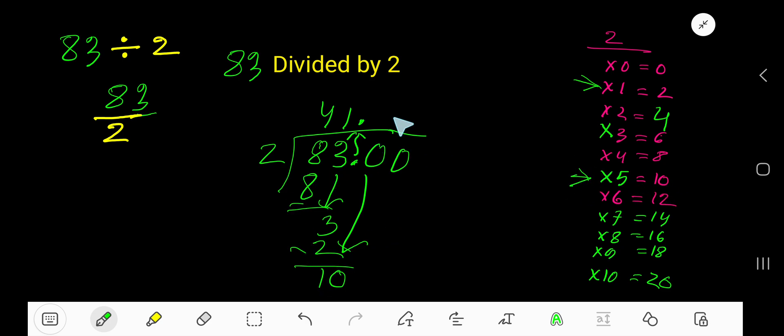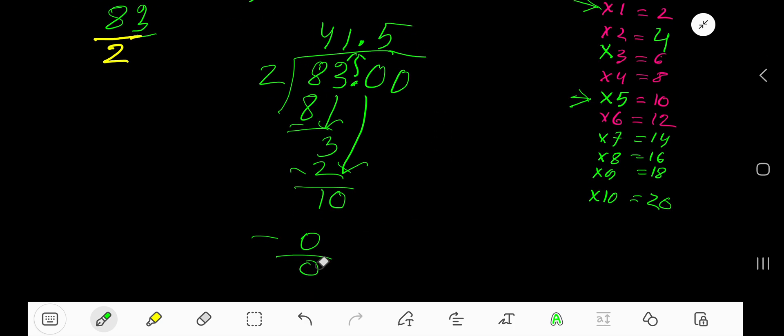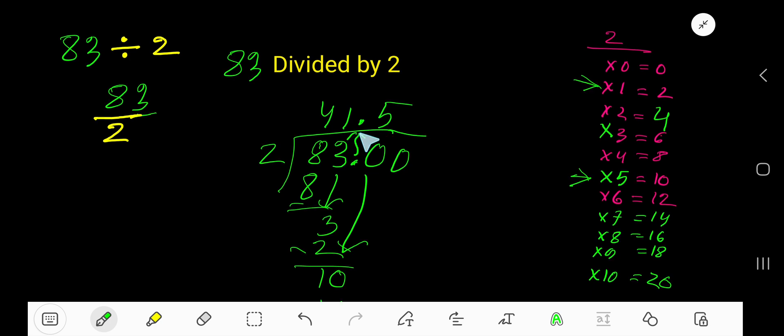10 divided by 2 is 5 times. Write 5. 5 times 2 is 10, subtract to get 0. So your answer is 41.5.